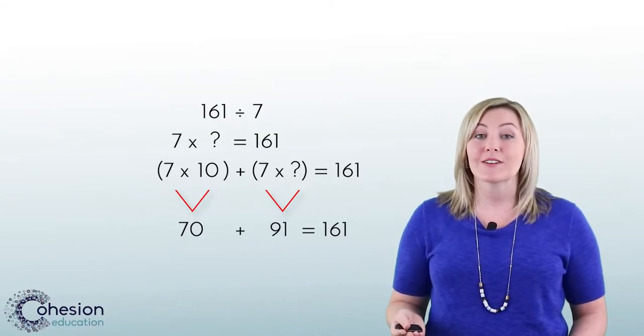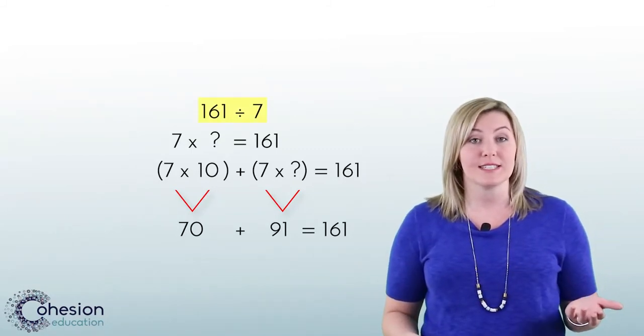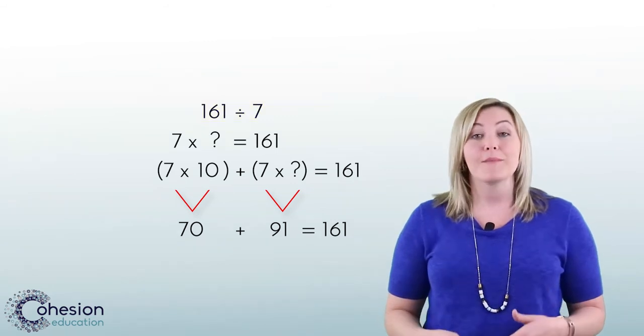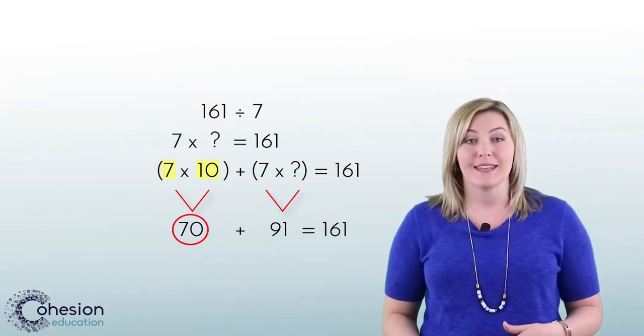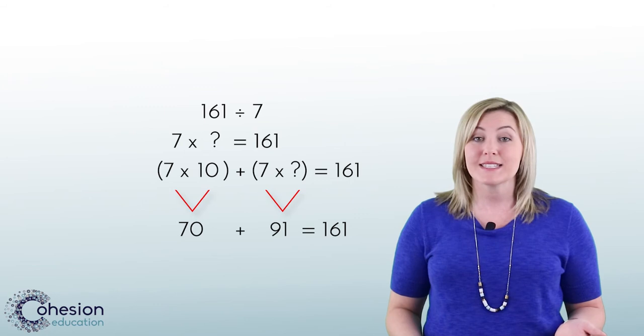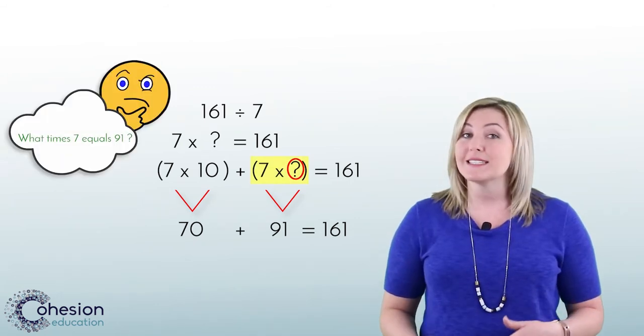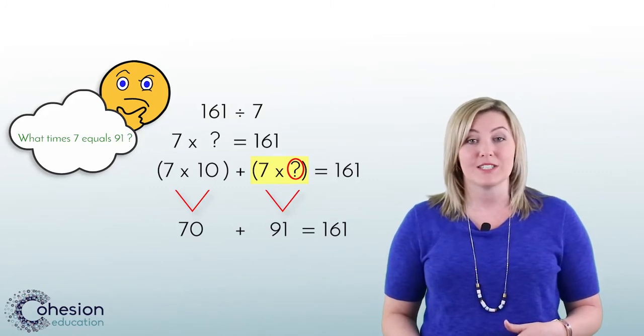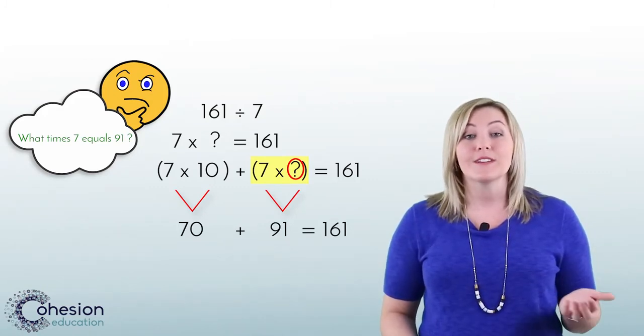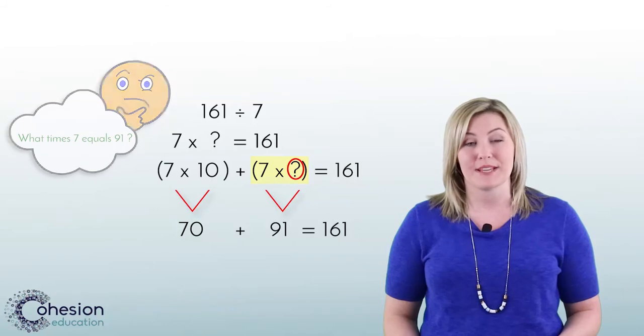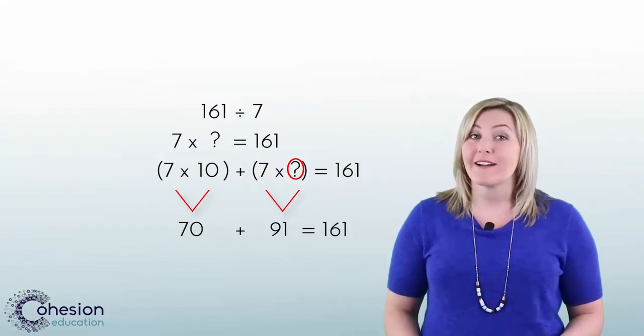For example, if the student encounters a problem like 161 divided by 7 and begins with 7 times 10, that means they will need to mentally find out what times 7 is 91. This is not a mental fact students in 5th grade are expected to know, and therefore defeats the purpose of using the distributive property.